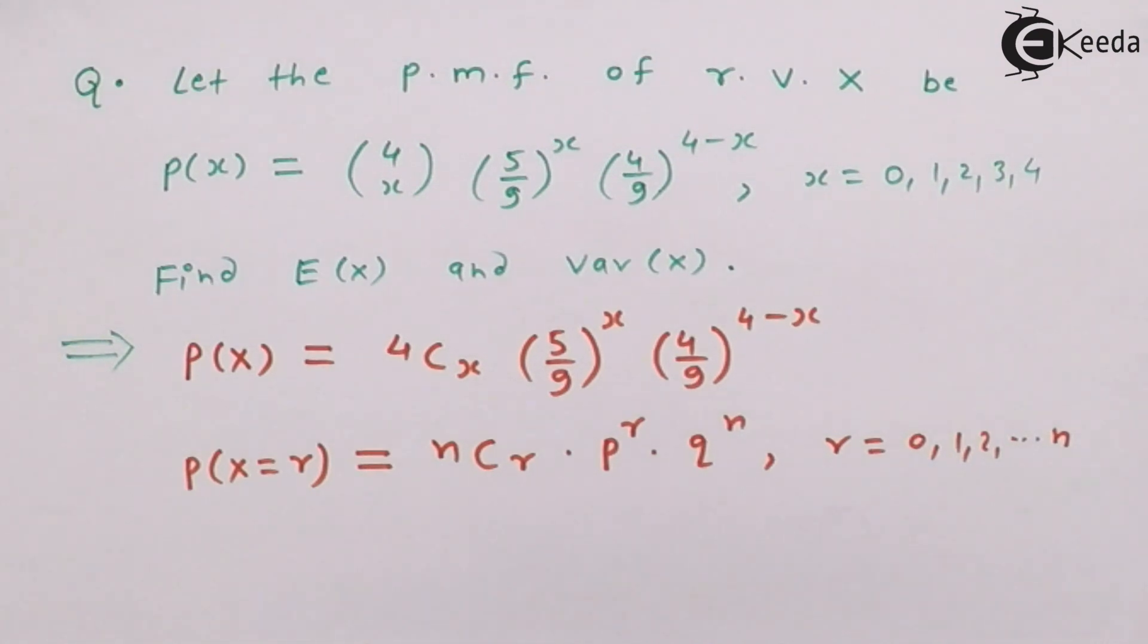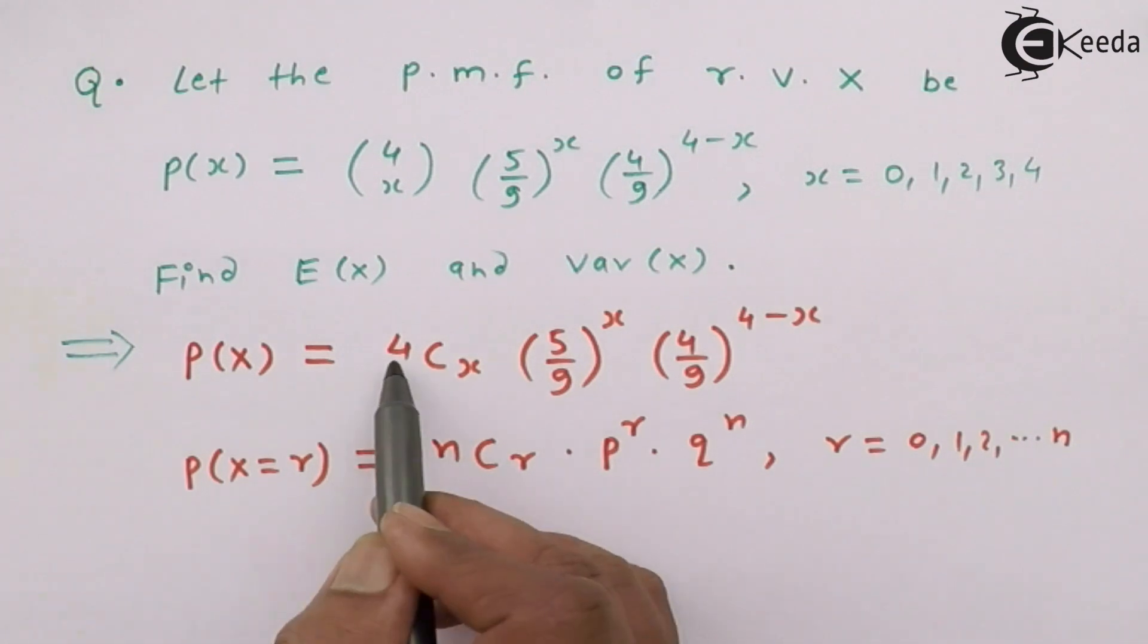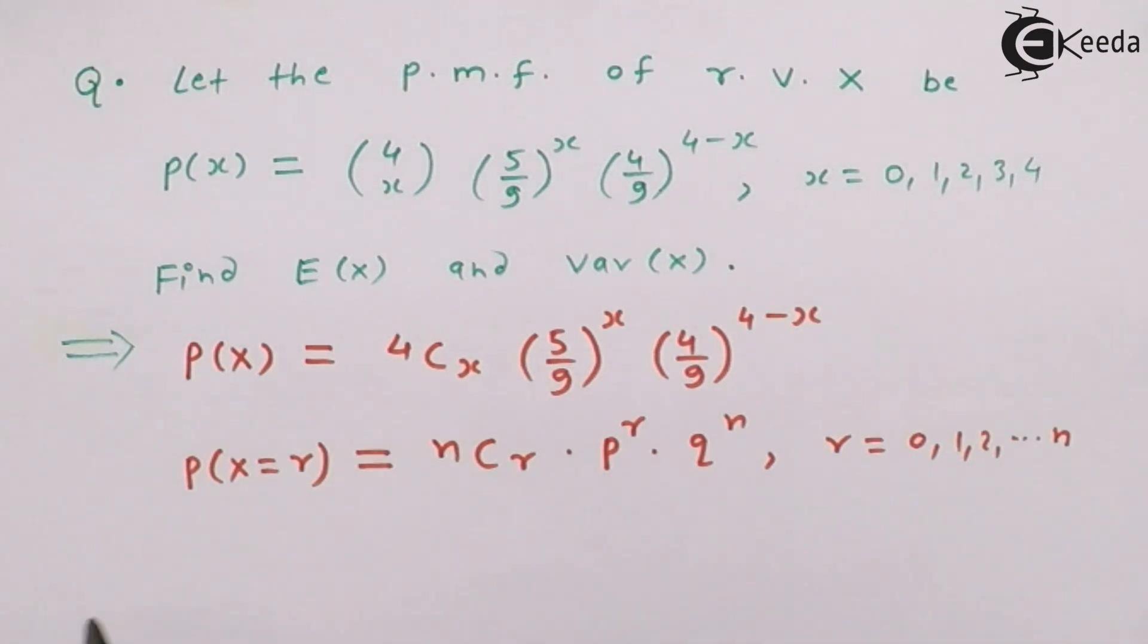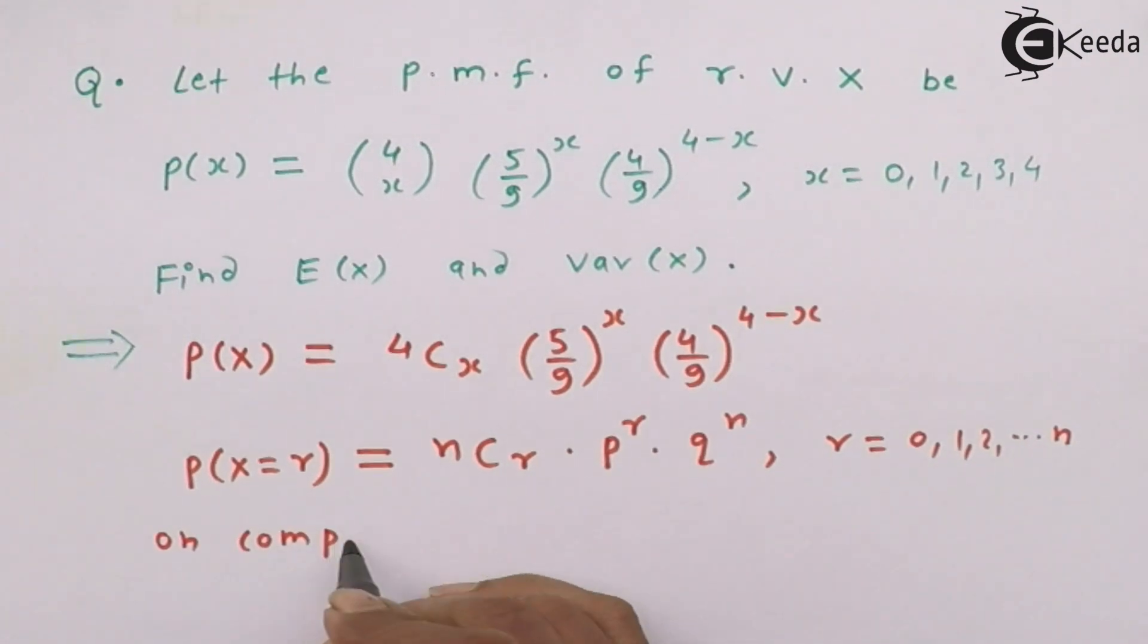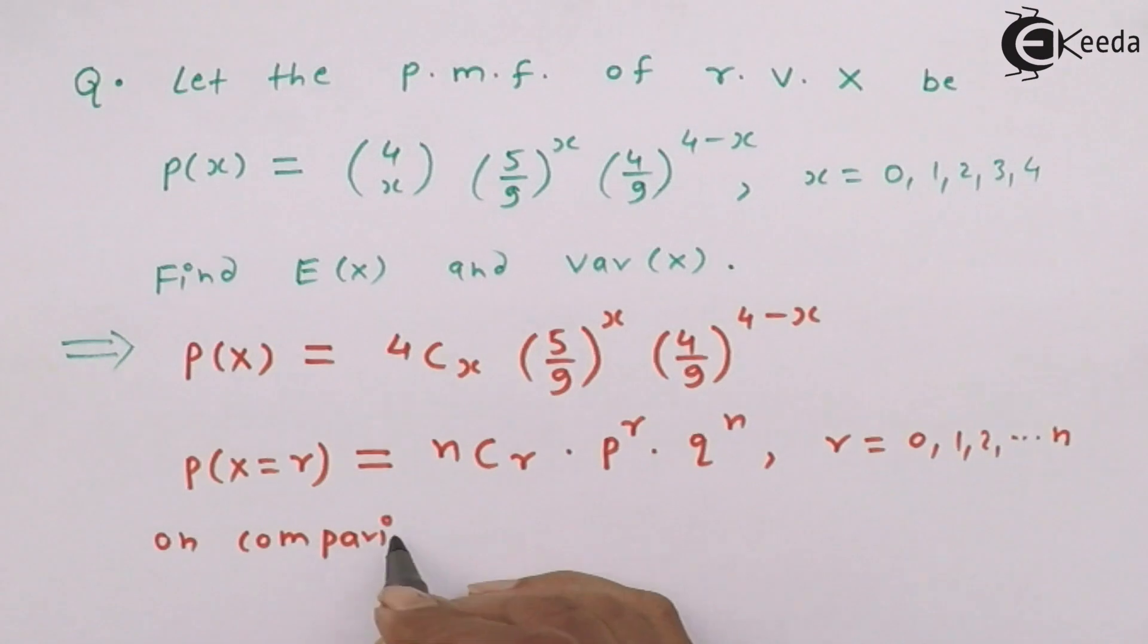So, comparing these two, we get N equal to 4, then P equal to 5 upon 9, and finally Q equal to 4 upon 9.